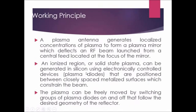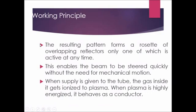The working principle of a plasma antenna: it generates a localized concentration of plasma to form a plasma mirror, which reflects an RF radio frequency beam launched from a central feed located at the front. An ionized region or solid-state plasma can be generated in silicon using electronically controlled devices like plasma diodes, which are positioned between closely spaced metalized surfaces that constrain the beam. The plasma can freely move by switching groups of plasma diodes on and off, following the desired geometry of the reflector. When supply is given to the tube, the gas inside gets ionized to form the plasma.